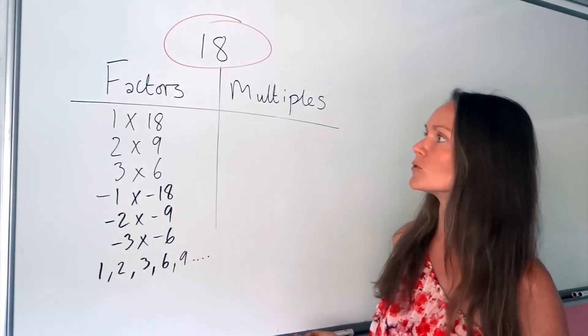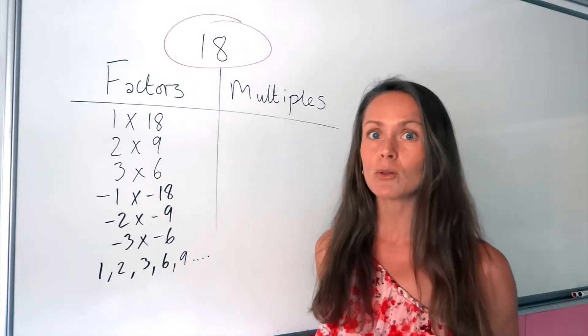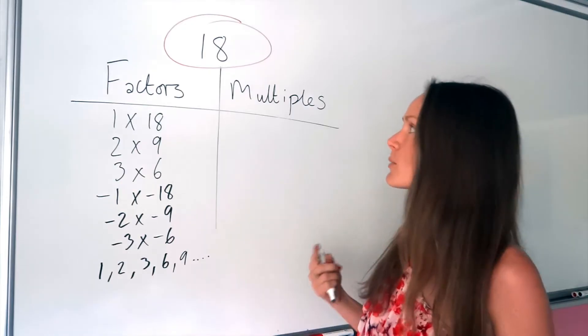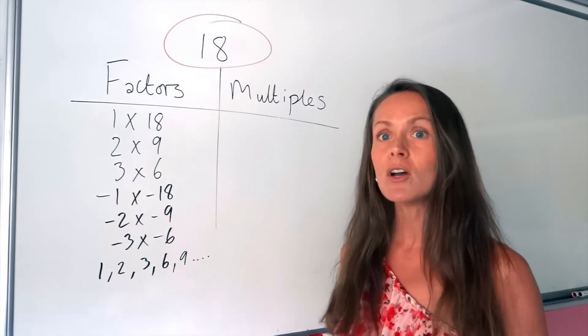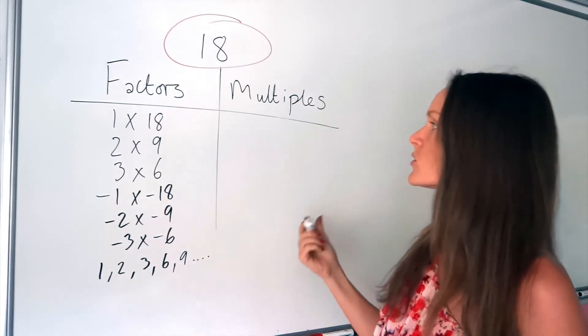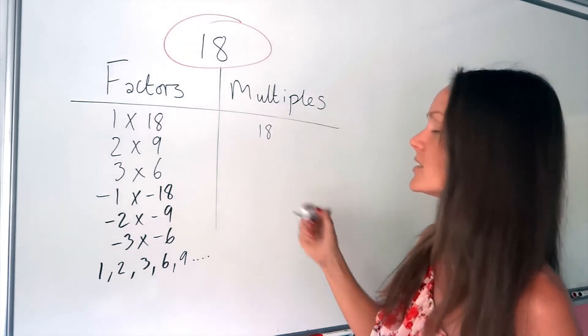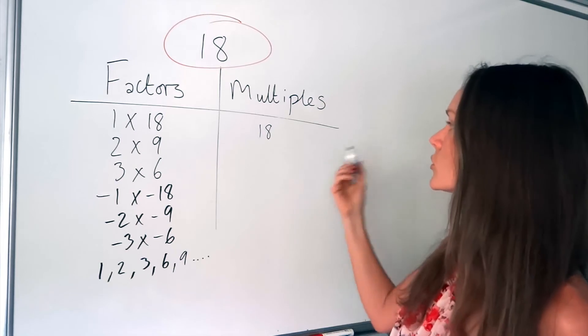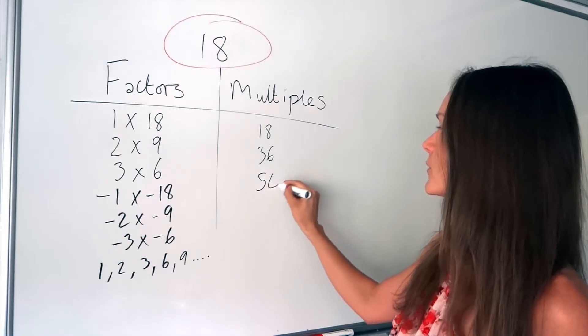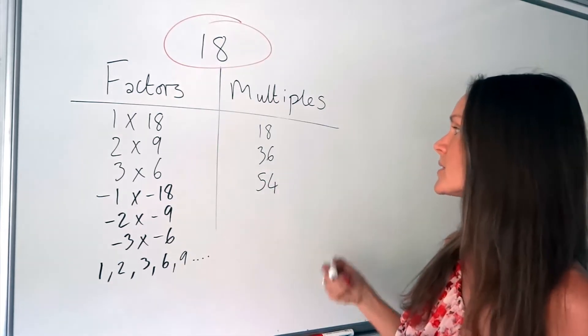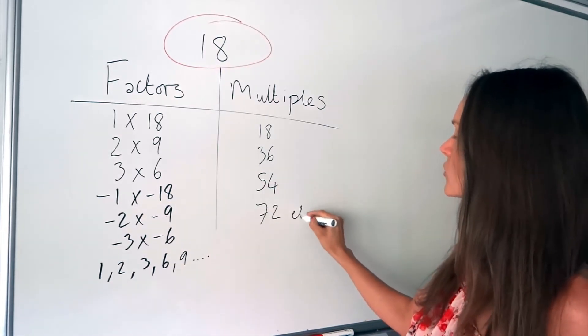Now for the multiples. So remember, to find the multiples, you must multiply. So we're multiplying 18. We're looking for the 18 times table to generate the multiples. So 1 times 18 is just 18, 2 times 18 is 36, 3 times 18 is 54, 4 times 18 is 72, and so on.